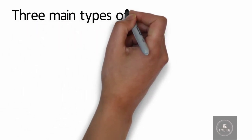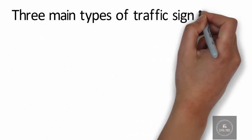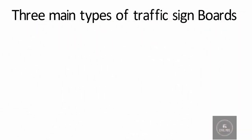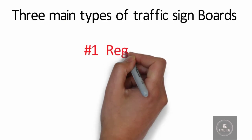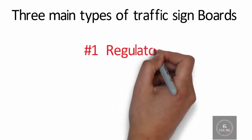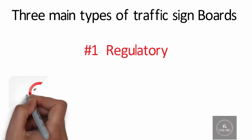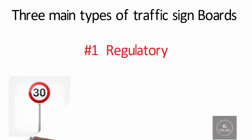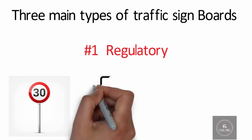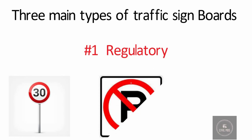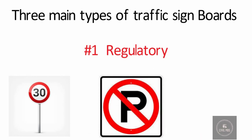There are three main types of traffic sign boards. Regulatory signs give motorists notice of traffic laws or regulations. They are circular in shape.